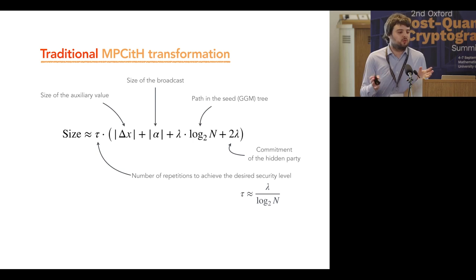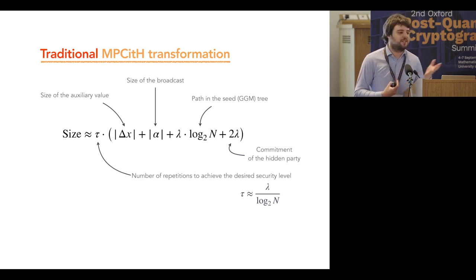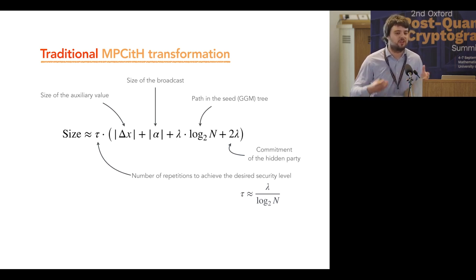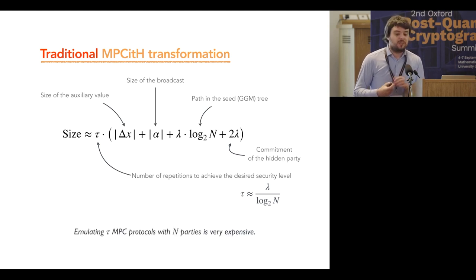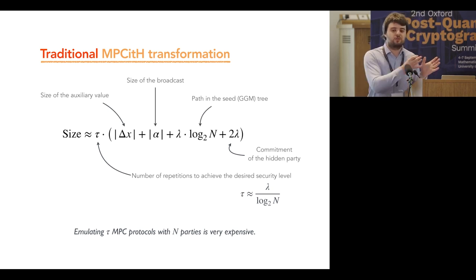Summarizing these optimizations, we obtain a new formula representing the best we can achieve with the current state of the art. We can achieve signature sizes below 10 kilobytes. However, there is still a problem: the prover needs to emulate the MPC protocol in its head, which is very expensive. You need to compute many parties, many times, since we repeat tau times. In practice, this is often the bottleneck in computation time for both signing and verification, since the verifier also needs to recompute computations for all parties except one.